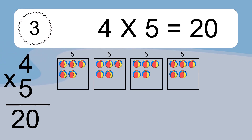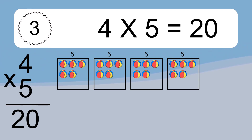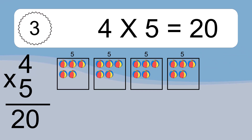We have 4 boxes, and each box has 5 colorful balls inside. If you count all the balls in all the boxes together, you will have 4 times 5 balls. This equals 20 balls.